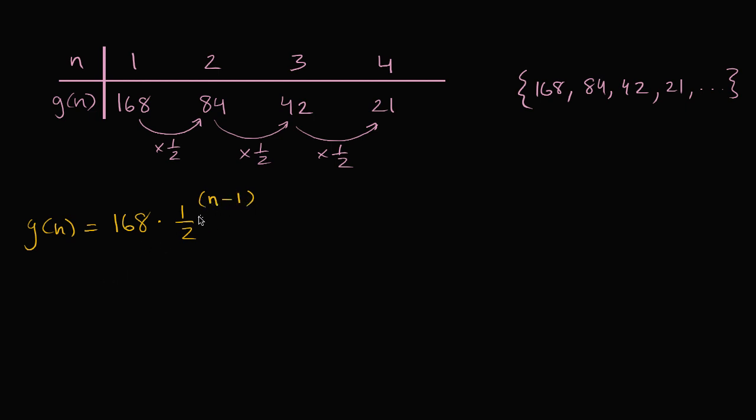And you can see that this works. If n is equal to one, you're going to have one minus one, that's just gonna be zero, 1 half to the zero is just one, so you're just gonna get 168. If n is two, well two minus one, you're gonna multiply by 1 half one time, which you see right over here. n is three, you're gonna multiply by 1 half twice. Three minus one is two. You're gonna multiply by 1 half twice, and you see that right over there.